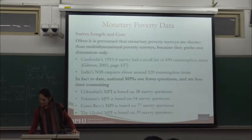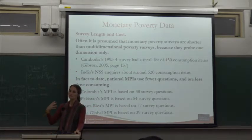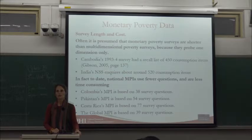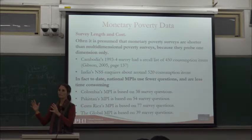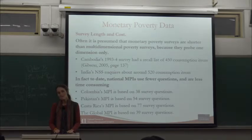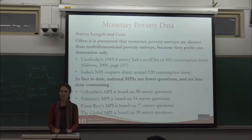The presumption very often, as we move from monetary to non-monetary poverty, is that the data requirements of multidimensional poverty are higher — because in monetary poverty you have one dimension and in MPI you have three to five. But actually empirically, the cost in terms of survey data and time of collection is much lighter for multidimensional poverty surveys. Cambodia's 1993 survey had 450 consumption items. The national MPI with the most questions to date is Costa Rica, with 20 indicators based on 77 survey questions; the global MPI on 39, Colombia on 38.